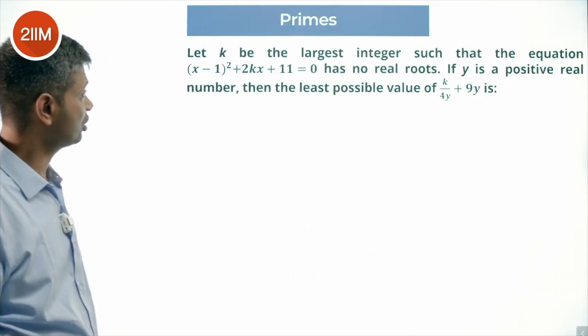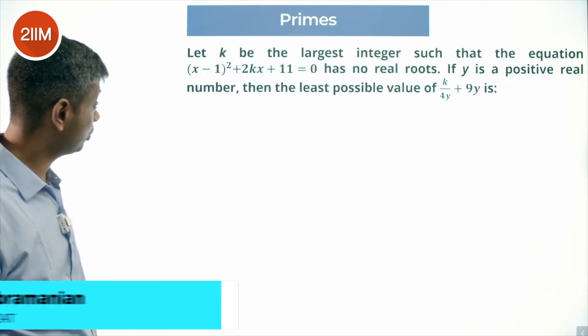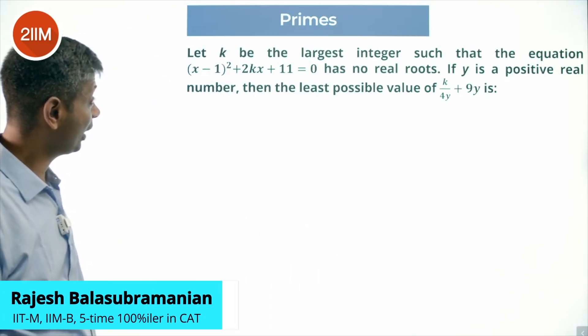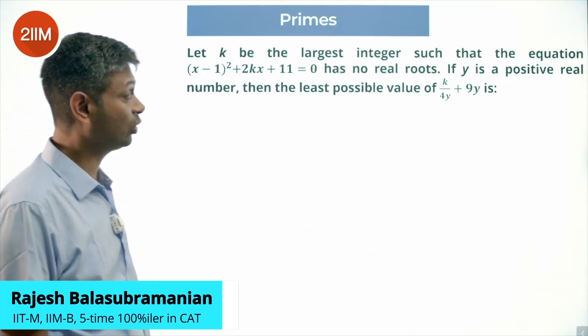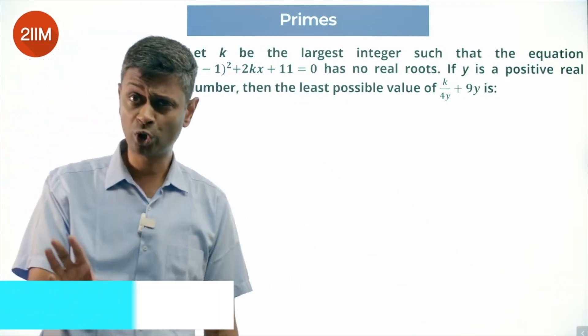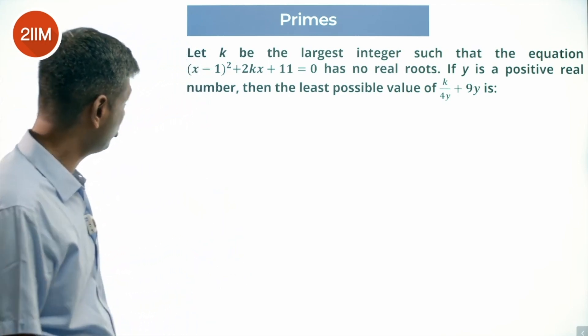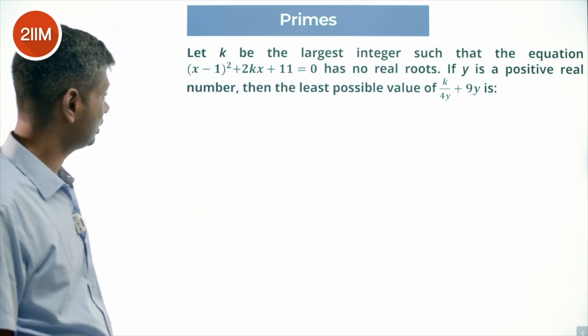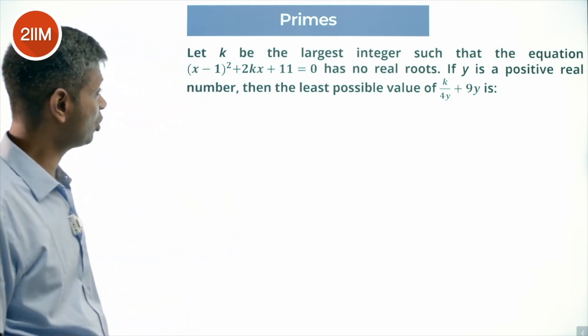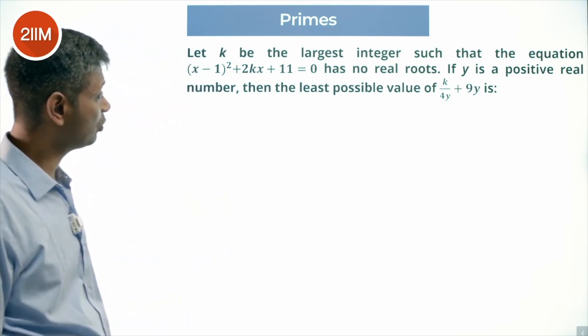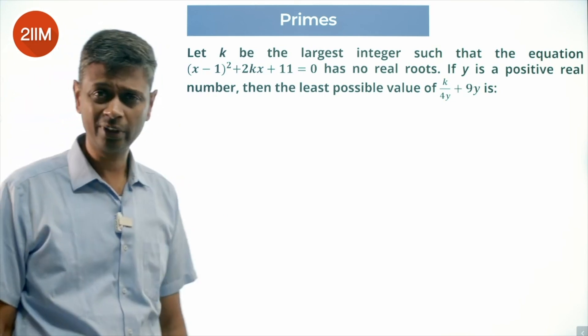Let k be the largest integer such that the equation (x minus 1) squared plus 2kx plus 11 equal to 0 has no real roots. If y is a positive real number, then find the least possible value of k divided by 4y plus 9y.